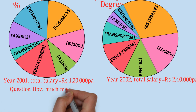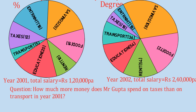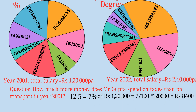The first question is: how much more money does Mr. Gupta spend on taxes than on transport in 2001? Taxes are 12% and transport is 5%, so the difference is 7%. Since both are given in percentages for the same year, we directly calculate 7% of 1,20,000, which gives 8,400. That is the answer.